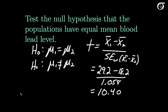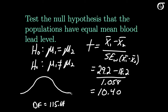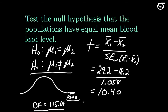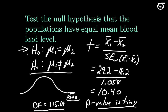For the p-value, we draw the t distribution with 115.64 degrees of freedom. Our t value of 10.40 is far out in the right tail, and with the two-sided alternative, the p-value is double the area to the right of 10.40. Throwing this into a computer, the p-value is essentially zero — very, very strong evidence against the null hypothesis.